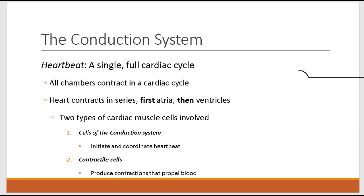A heartbeat refers to one single full cardiac cycle. In a heartbeat or cardiac cycle, all four of the heart's chambers will contract — the heart contracts in series. First the two atria contract, then the two ventricles contract. There are two types of cardiac muscle cells involved: cells of the conduction system, which initiate and coordinate the heartbeat, and the actual contractile cells that generate the force necessary to propel blood through the body.